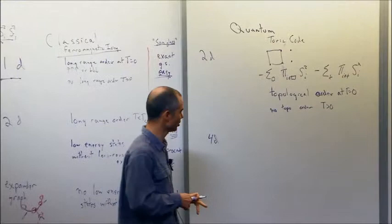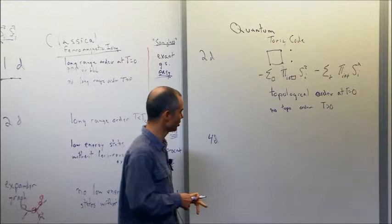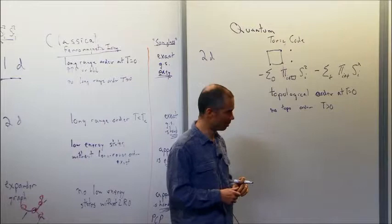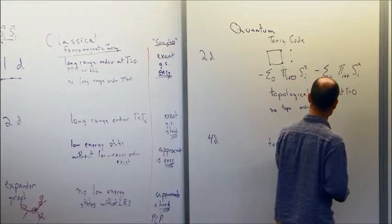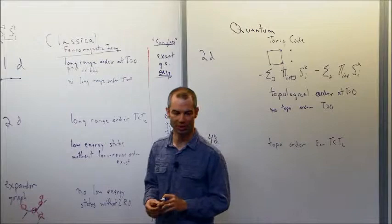If I go to four dimensions, there's another version of the Toric code on a four-dimensional lattice. Remarkably, this even has topological order for T smaller than some critical temperature, and this critical temperature is strictly positive.